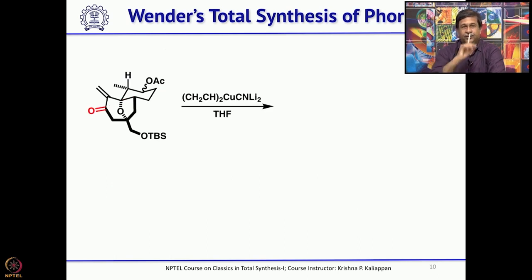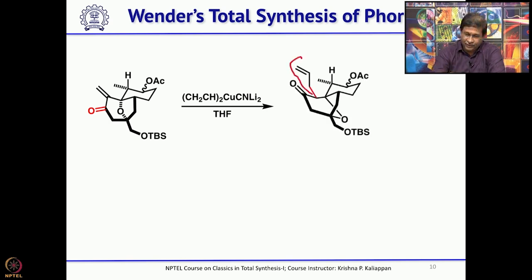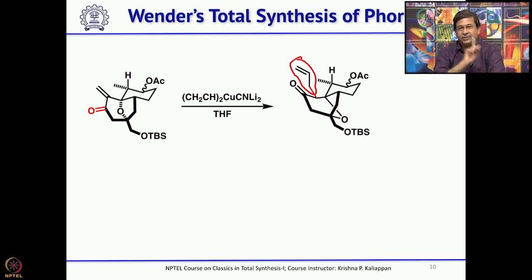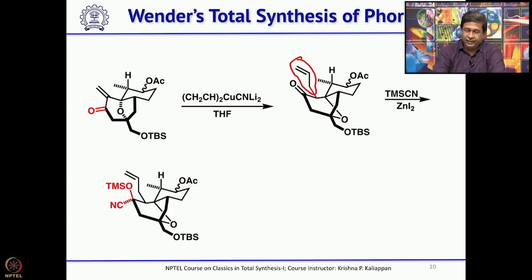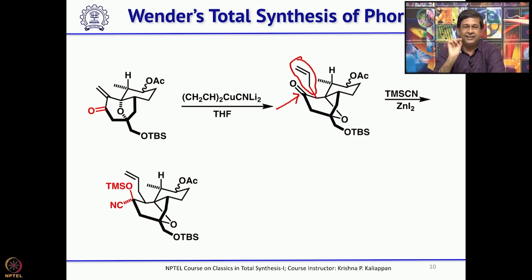Manganese dioxide facilitates allylic oxidation to give the alpha,beta-unsaturated ketone. A 1,4-addition with vinylcopper introduces an allyl group next to the carbonyl. The ketone is then treated with TMS cyanide, adding a cyanide to the ketone; the resulting cyanohydrin is in-situ protected as a TMS ether.